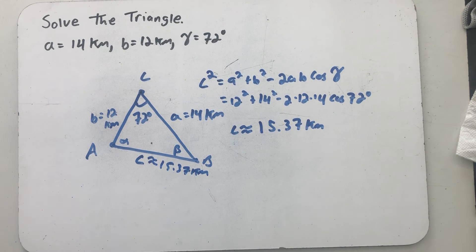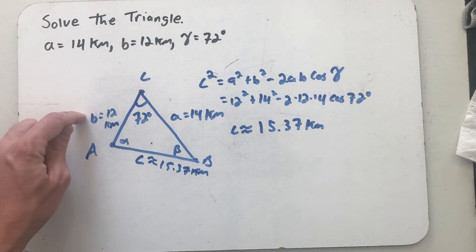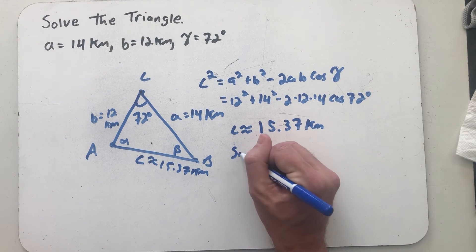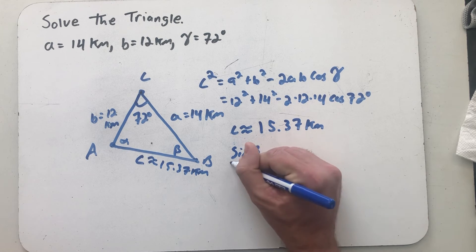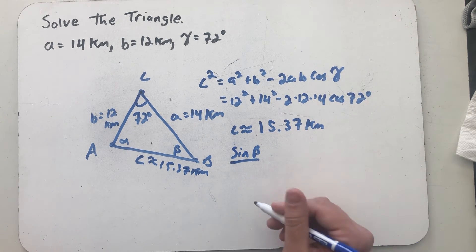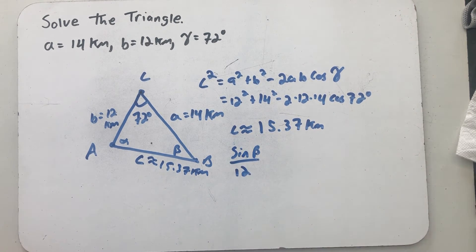Now I get to find an angle, and when I'm finding an angle in one of these side angle side problems, I always like to make sure I'm dealing with an acute angle. So if I pick the angle across from the smallest side, I know I'm dealing with an acute angle. I'm doing that because when I take inverse sine, I can only get acute angles because I'm dealing with positive values here.